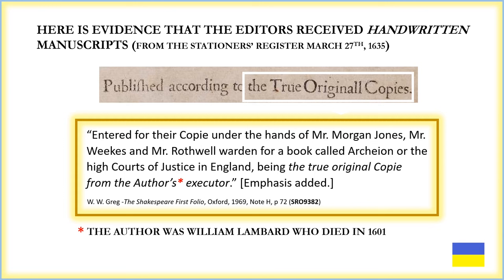The entry reads: 'Entered for their copy under the hands of Mr. Morgan Jones, Mr. Weeks, and Mr. Rothwell Warden, for a book called Archeon, or the High Courts of Justice in England, being the true original copy from the author's executor.' This is note H on page 72 from W.W. Gregg's book, The Shakespeare First Folio, published in Oxford, 1969 — Stationers' Register Office SRO 9382. The author was William Lambert, who died in 1601; thirty-four years later, his book finally got registered to be printed.